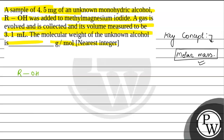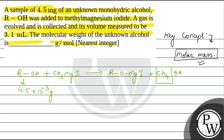We have a monohydric alcohol ROH — unknown — with a weight of 4.5 mg, which equals 4.5 × 10⁻³ grams. When we react it with methyl magnesium iodide (CH₃MgI), the product formed is ROMgI plus CH₄. So the gas being evolved here is methane.